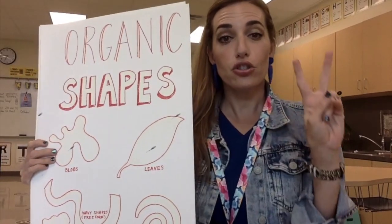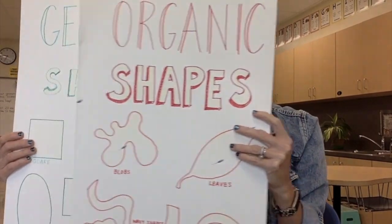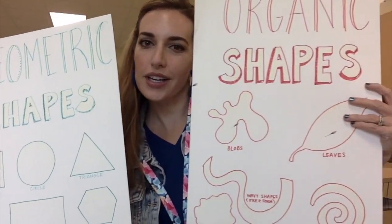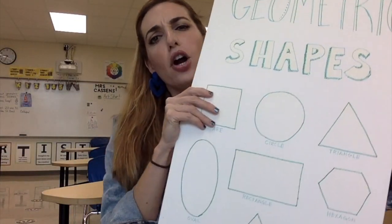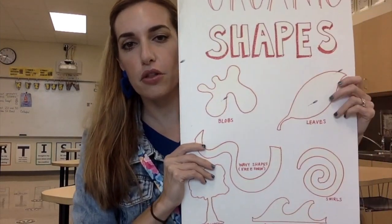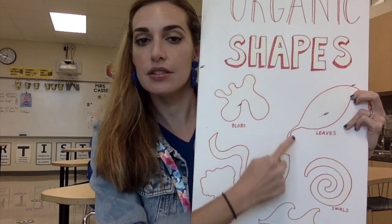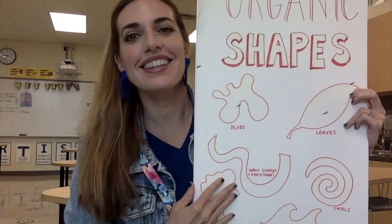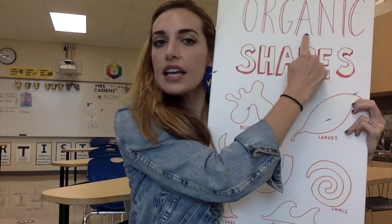So today we're going to look at two different types of shapes: geometric shapes and organic shapes. Organic shapes are things that kind of are blobby or appear in nature — things like splats, swirls, sometimes leaves, waves, and more swirls. These are all examples of organic shapes.